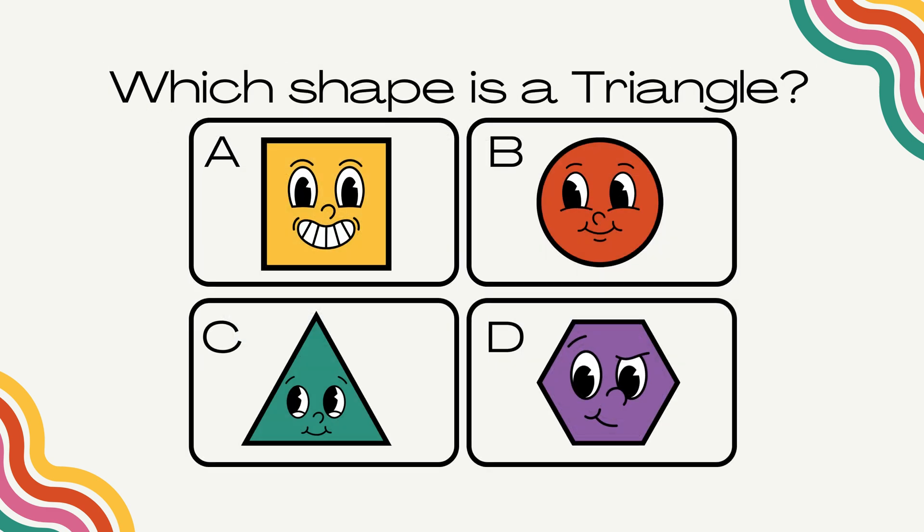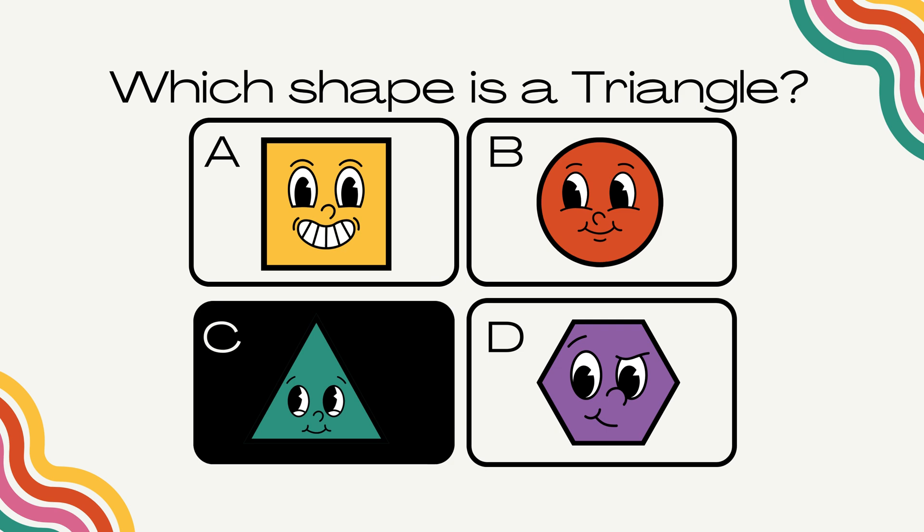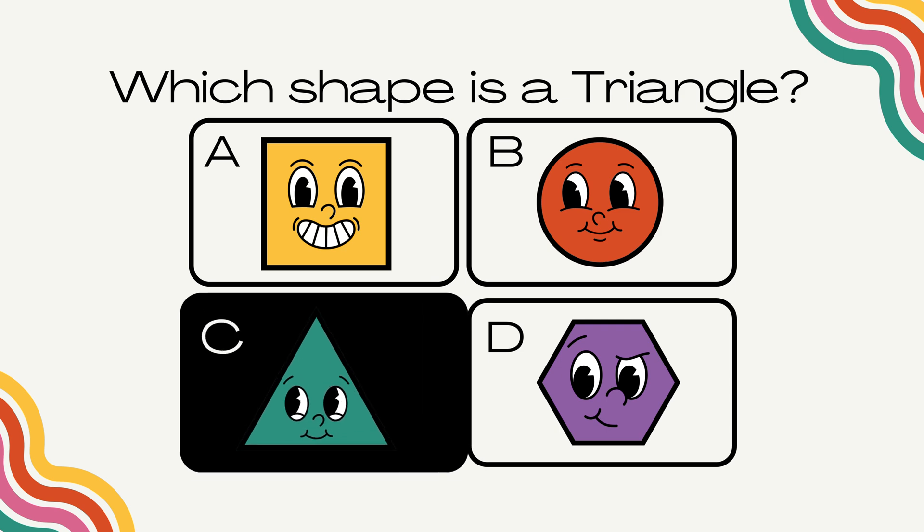Which shape is a triangle? The correct answer is C.